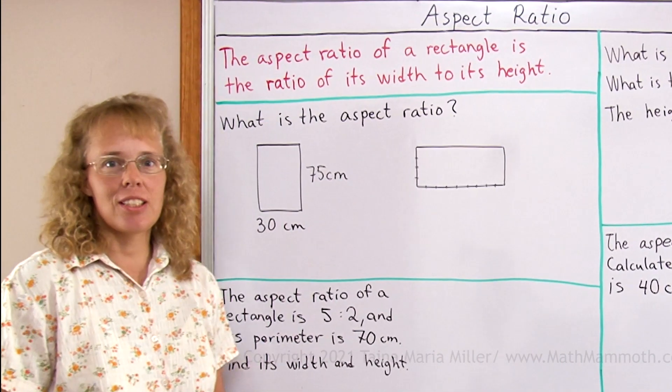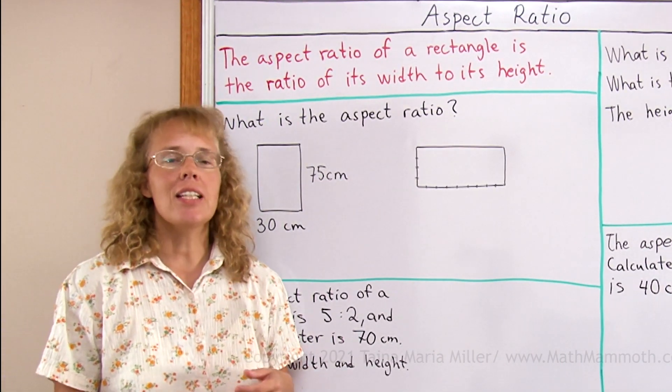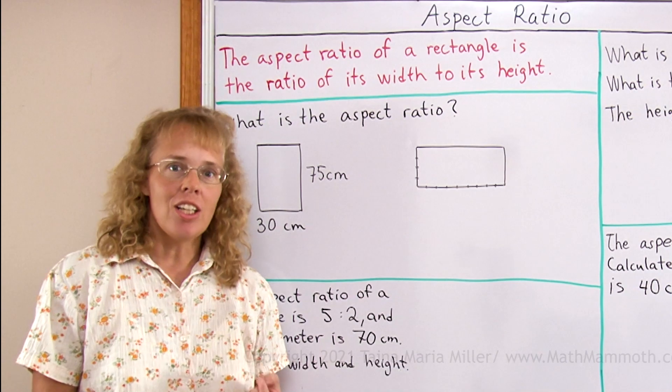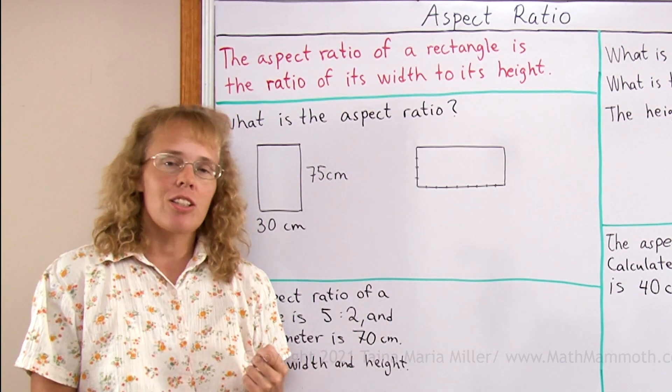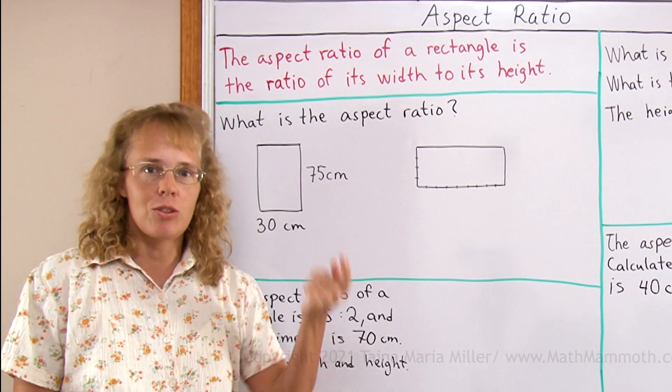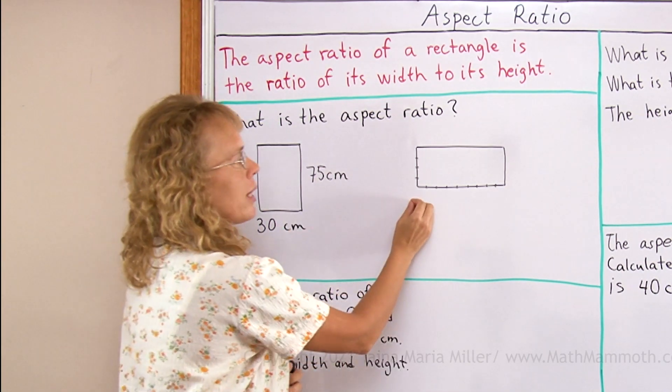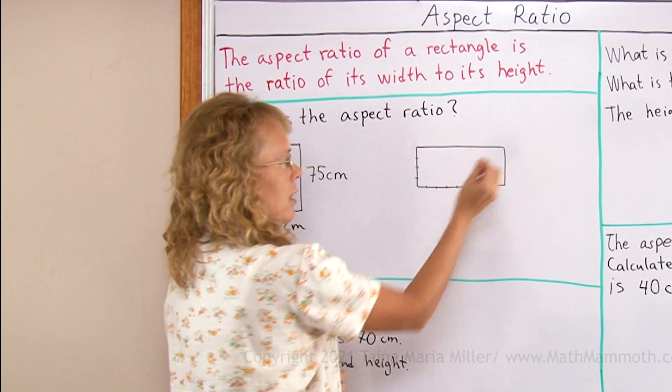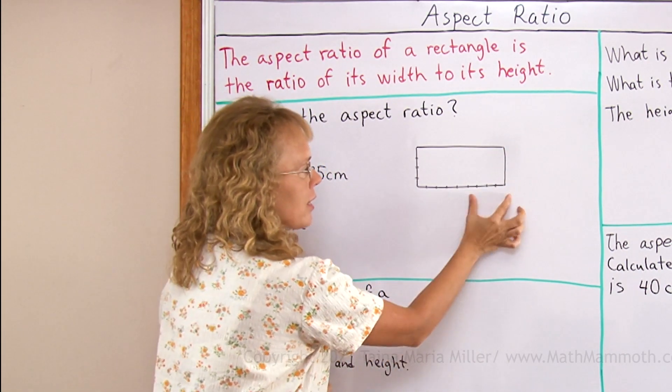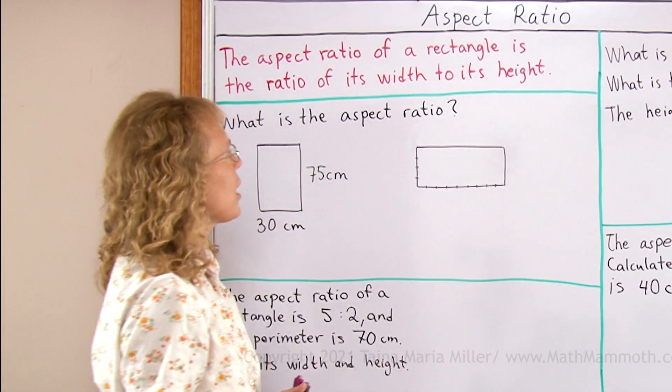Aspect ratio is something that applies to rectangles and it is simply the ratio of the rectangle's width to height, or you could think of it as length to height whichever way. But if you have a rectangle like here, it is always this side length to this side length. The ratio of this length to this length, okay?